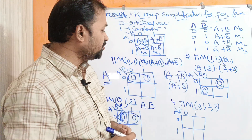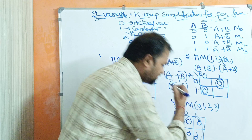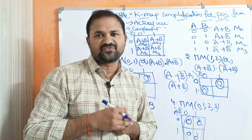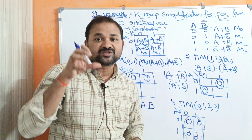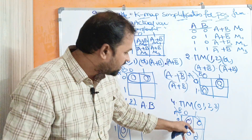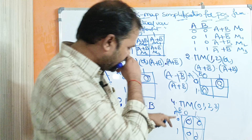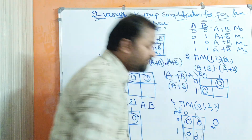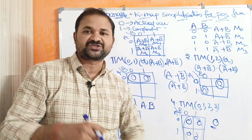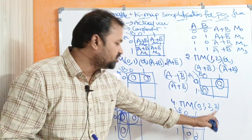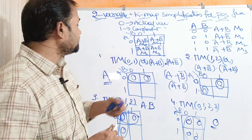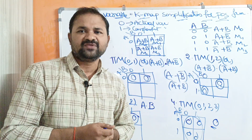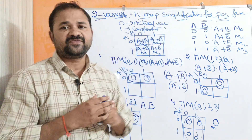Let us solve the last problem: πM(0,1,2,3). We write zeros in all four cells. We can make all four cells one group, since the group size is a power of two. If a group contains four zeros it produces fewer literals. Here both A and B are changing from 0 to 1, so both are eliminated. The simplified expression is 0 — because in POS, a group of all cells with zeros gives 0, unlike SOP where a group of all ones gives 1. In this way we can simplify Boolean expressions in POS form using a two-variable Karnaugh map. In the next video we will see the three-variable Karnaugh map for POS simplification.